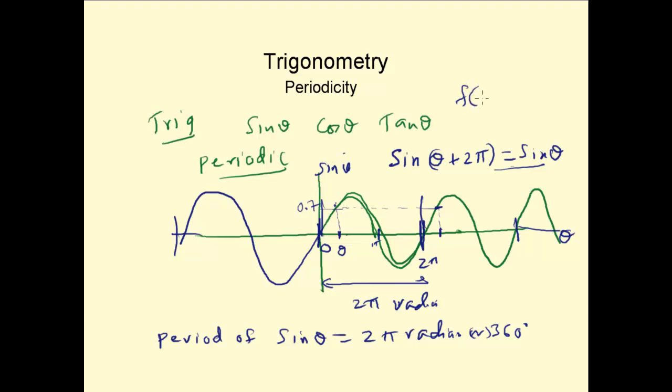It's something like f of θ plus a equals f of θ. Meaning a is the period of the function. So 2π is the period of the sin function.